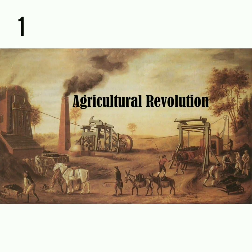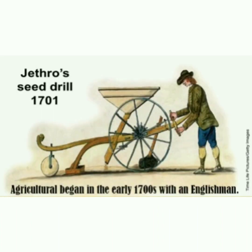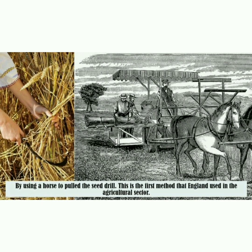First, the agricultural revolution. Agriculture began in the early 1700s with an Englishman using a horse to pull seed drills. This is the first method that the English used in the agricultural sector.